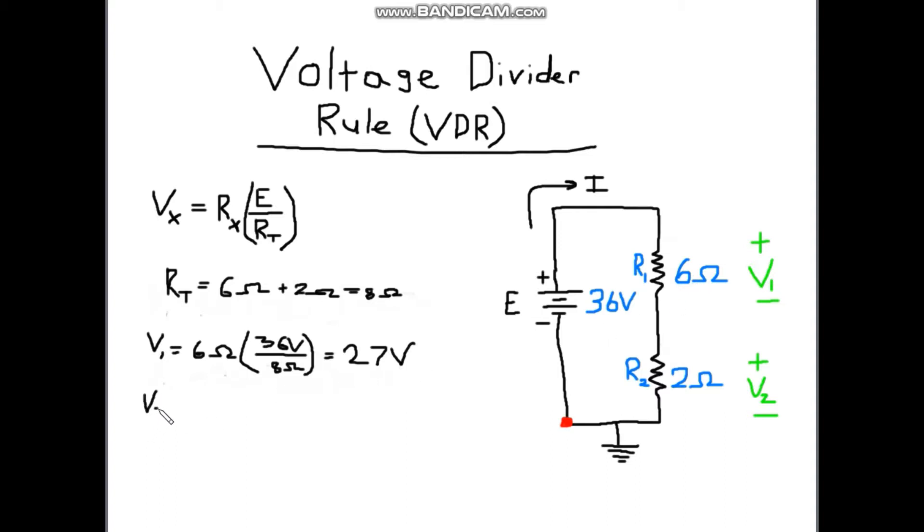So if we want to do the same thing for V2, we'll just say V2 equals the resistance of R2, which is 2 ohms, times source voltage is still just 36 volts, divided by 8 ohms. So again, what that's saying is that the voltage drop across this resistor is 9 volts.